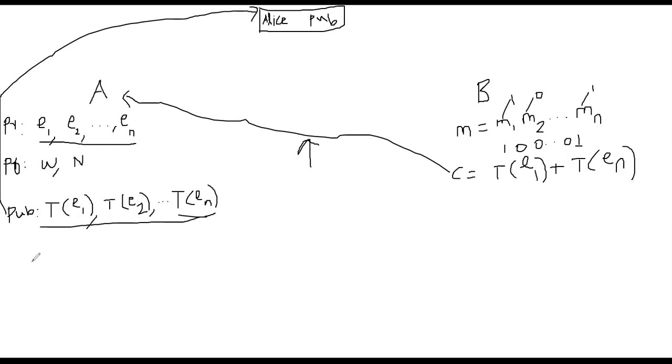Let me explain the trapdoor now. So how is T defined? So T is defined as follows. T of E i, some weight, i-th weight, from your private sequence, Alice's private sequence, is nothing but W, which is another private variable, W times E i mod n. That's basically the transformation that Alice will have to do from her private key to public key.